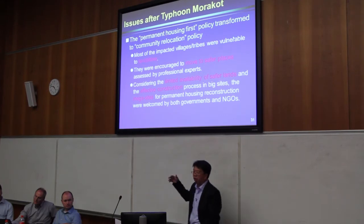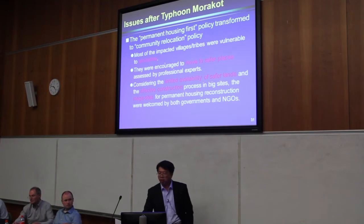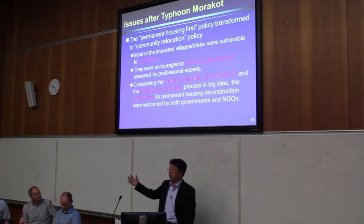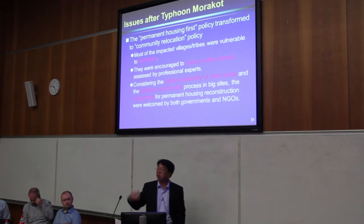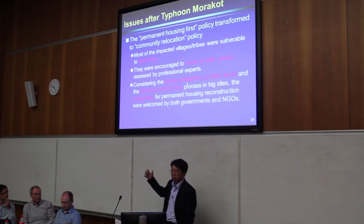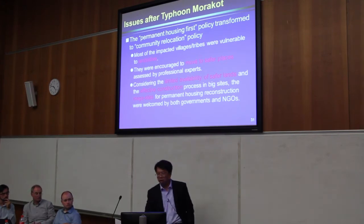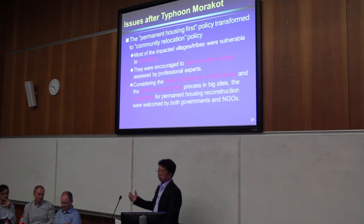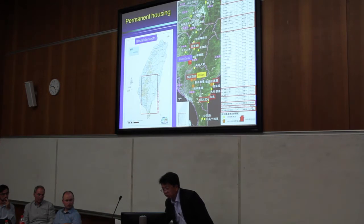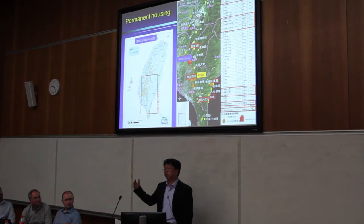However, this permanent housing first policy was transformed into a community relocation policy. Because most of the impact areas were vulnerable to landslide or debris flow, people were encouraged to move to safer places. These safer places were assessed by professional experts and professors from universities, also considering limited availability of safer land and effective reconstruction in large-scale sites. So what they called very mega-scale permanent housing reconstruction sites were welcomed by both government and the mega NGOs. We decided to rebuild 39 permanent housing units across those sites.